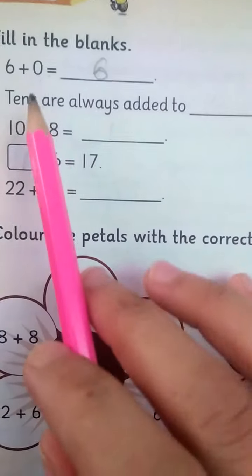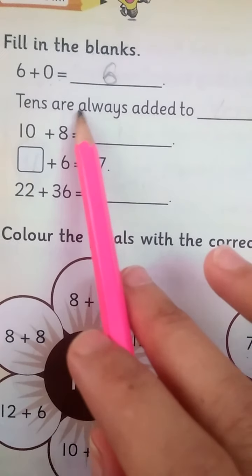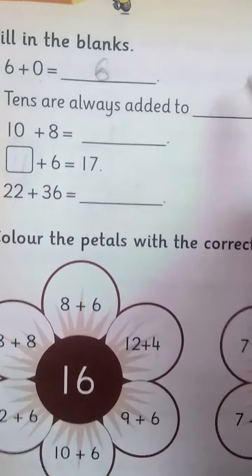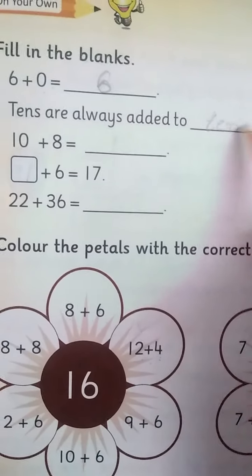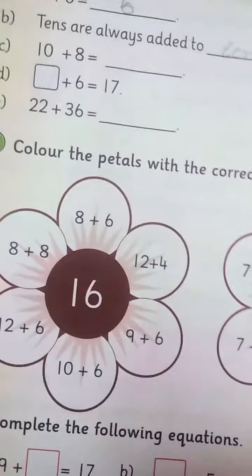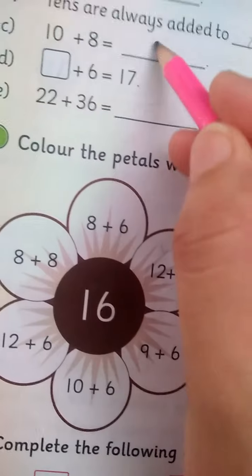0 has no value. The next one is tens always added to tens. 10 plus 8 is equal to 18.